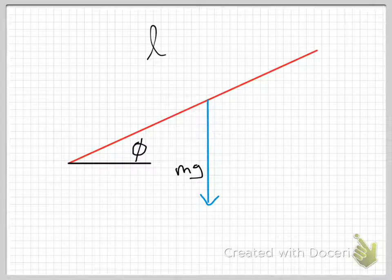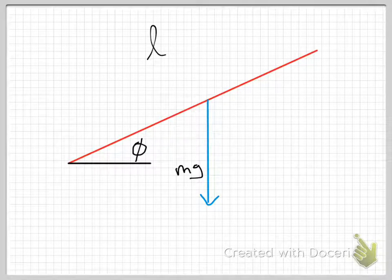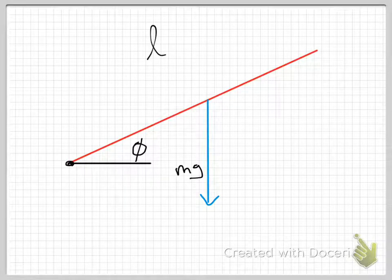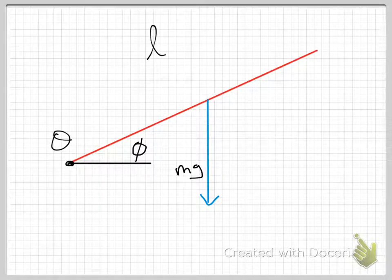And I'm going to ask what is the torque provided by gravity about the end here? So this might be some point O, and I'm going to say what is the torque provided by gravity about the point O?